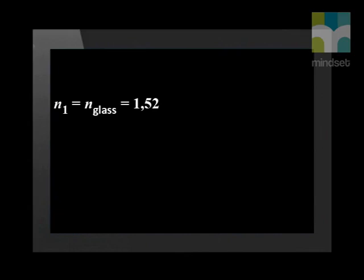As always, let us list our variables. N1, which is the refractive index of the glass, is 1.52. N2 is the refractive index of air, which is 1. We know that theta 2 is the critical angle, and therefore 90 degrees.